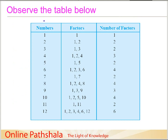Observe the table shown here very carefully. This table consists of three columns: numbers from 1 to 12, their factors, and a count of the number of factors. We start with number 1 — the only factor for 1 is 1 itself, so the number of factors is 1. For number 2, the factors are 1 and 2, giving 2 factors. For number 3, the factors are 1 and 3 — again 2 factors. For number 4, the factors are 1, 2, and 4, giving 3 factors.